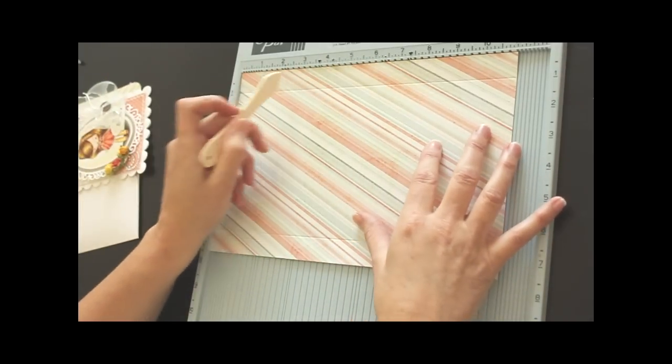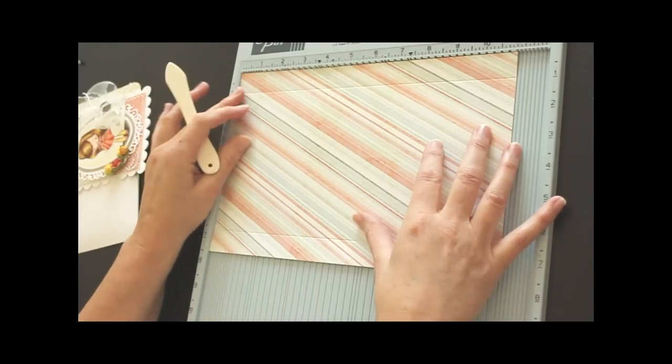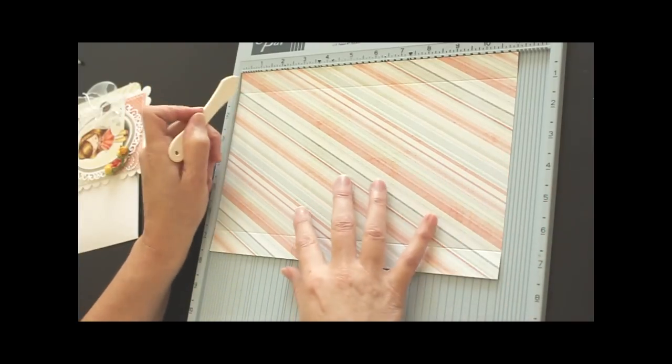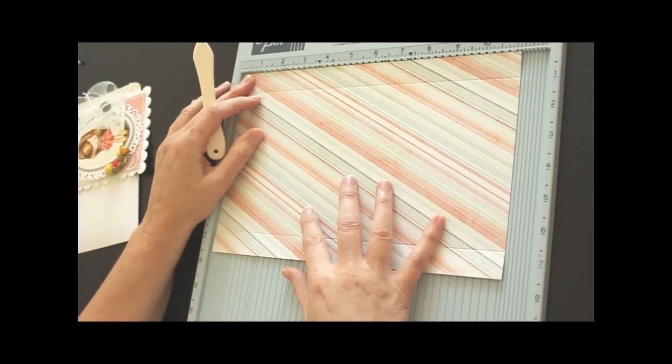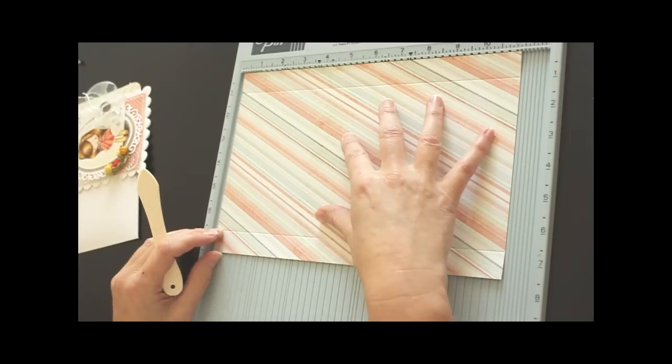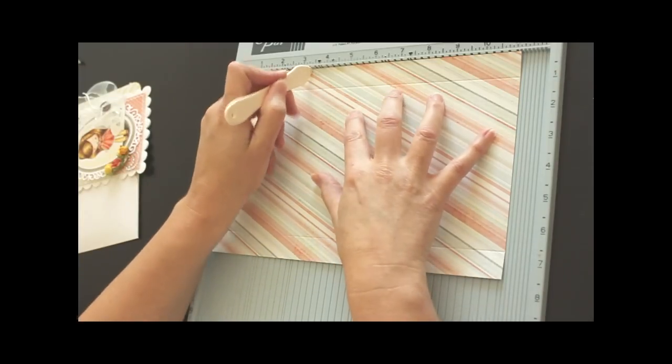So I'm going to score at 3 1/8 on each side, but my score pal doesn't have that, so I'm going to slide my paper over to the first 1 1/8 inch groove, and then score it at 1 1/4.